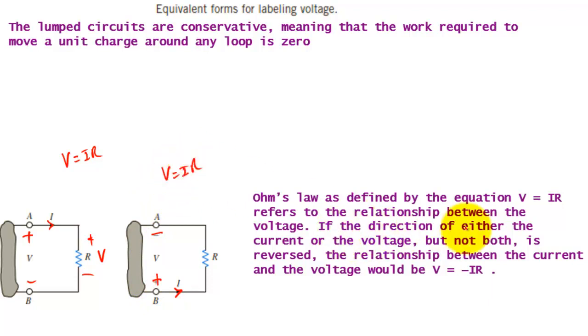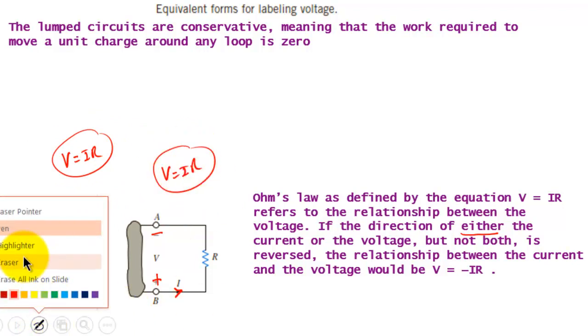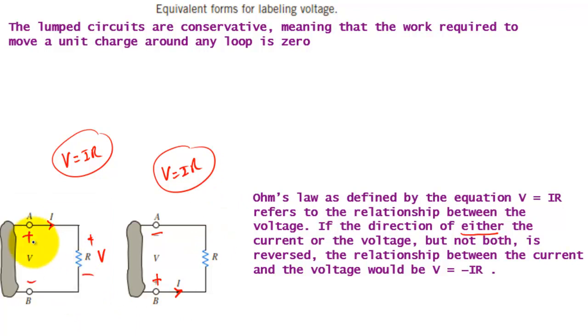If you change polarity and direction, still it's V equals IR. But if you change polarity and direction at a time, you can change polarity. Then you can change polarity.